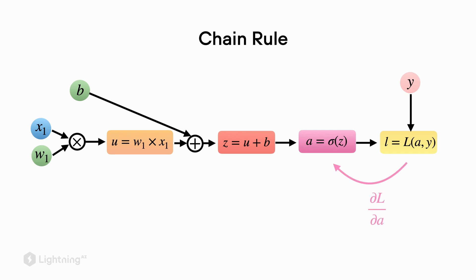We will start on the right hand side where we compute the partial derivative of the loss with respect to the activation a. Then next we will compute the derivative of a with respect to the net input z. Next we compute the derivative of the net input z with respect to u, where u is w1 times x1.